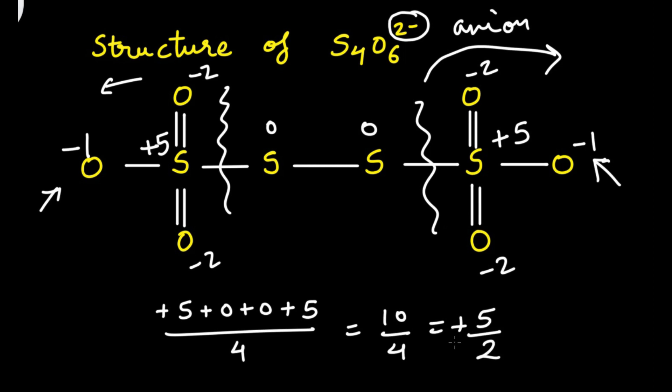So this is the paradox of fractional oxidation number — it is nothing but the average oxidation state of all the atoms in a particular molecule. This will be it for today's video. In the next video we will continue with some other topic. Thank you very much.